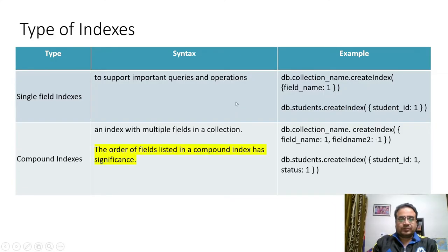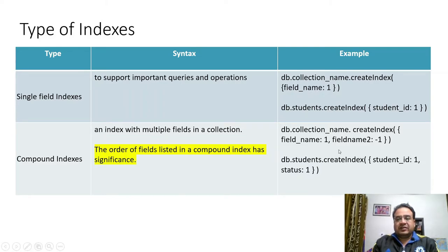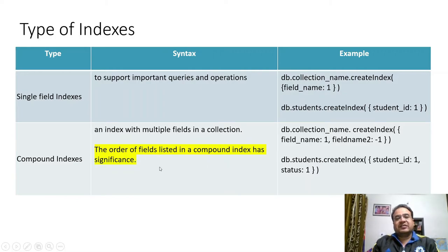Next, compound indexes — as the name signifies, more than one field is involved. Here, '1' represents ascending order and '-1' represents descending order. This example creates an index with studentID in ascending order and status also in ascending order. Please note that the order of fields listed in a compound index has significance — you will have to mention the same sequence in your queries to get the advantage of the index, otherwise the index will not be used. We will see this in the hands-on section.